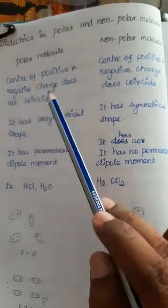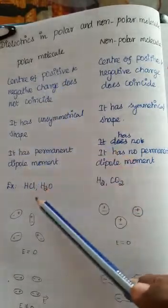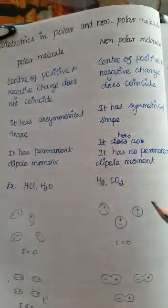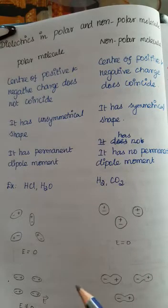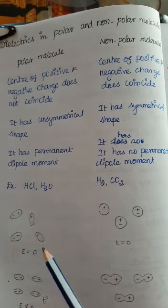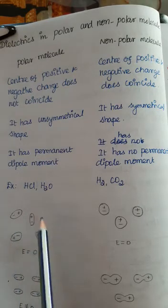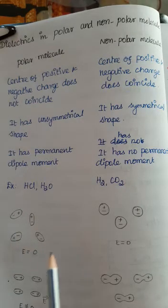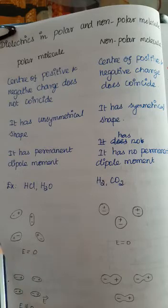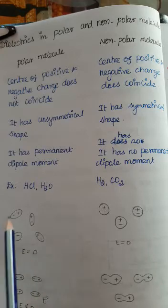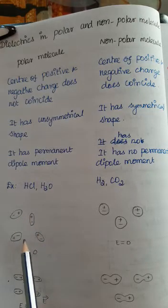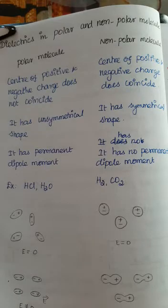In HCl and H2O, the center of positive charge and negative charge does not coincide — that's why these molecules belong to polar molecules, and hydrogen and carbon dioxide belong to non-polar molecules. Now, if a polar molecule is present in the absence of an electric field, the polar molecules are aligned in a random manner, as shown in the diagrams.